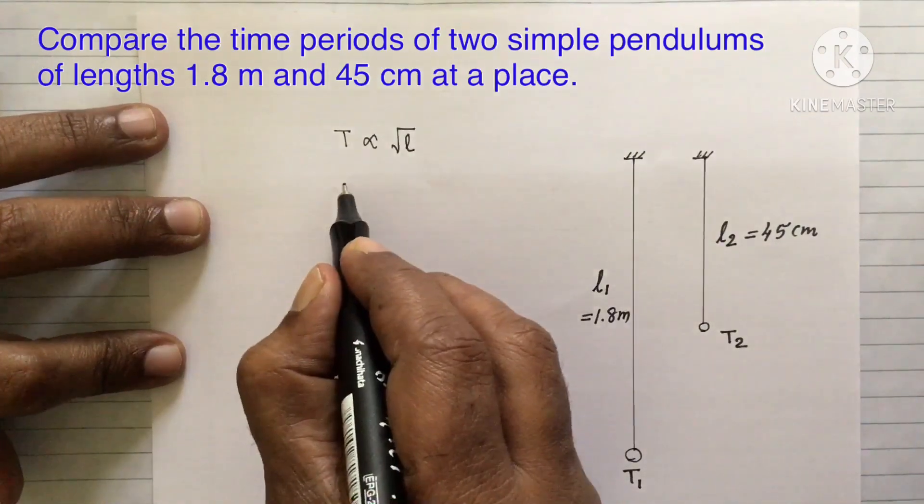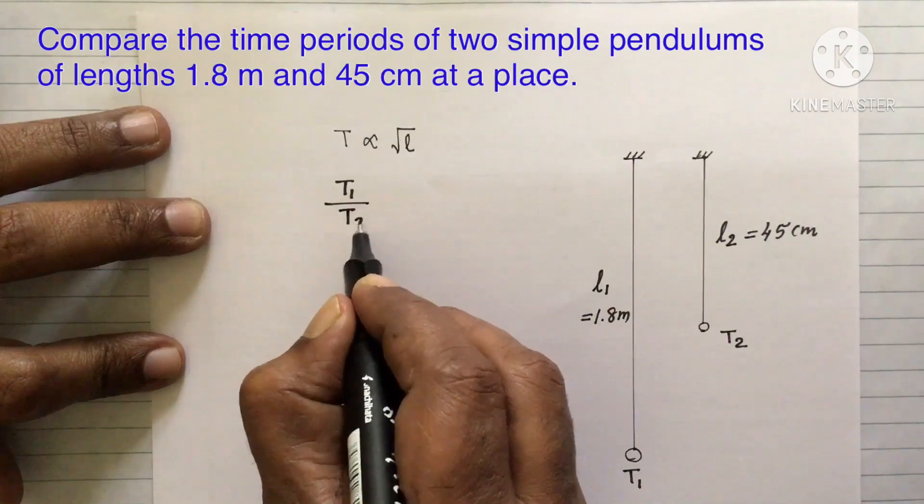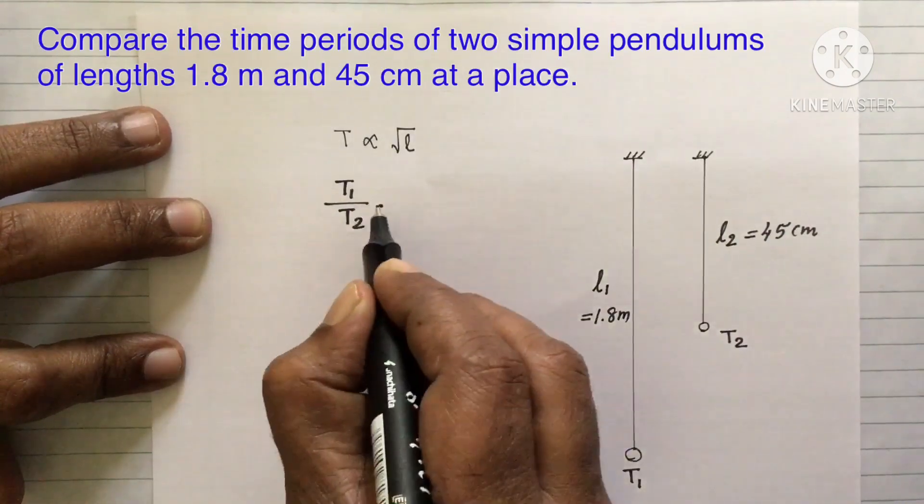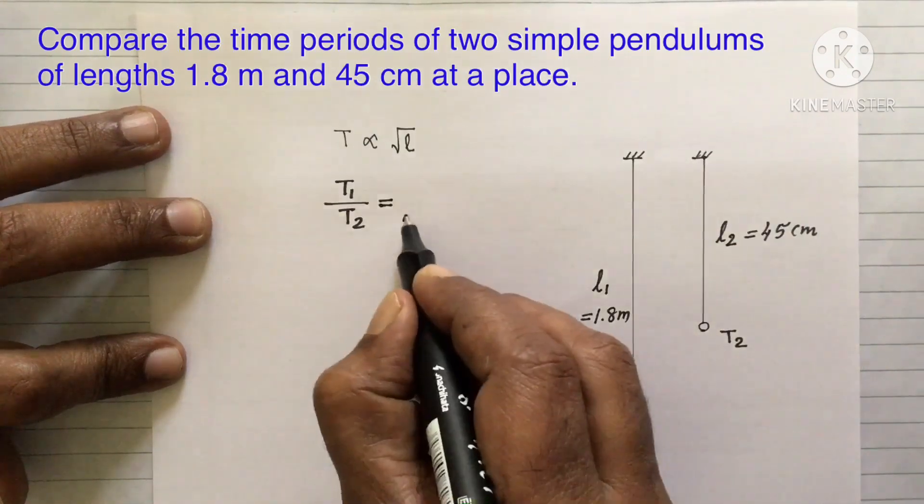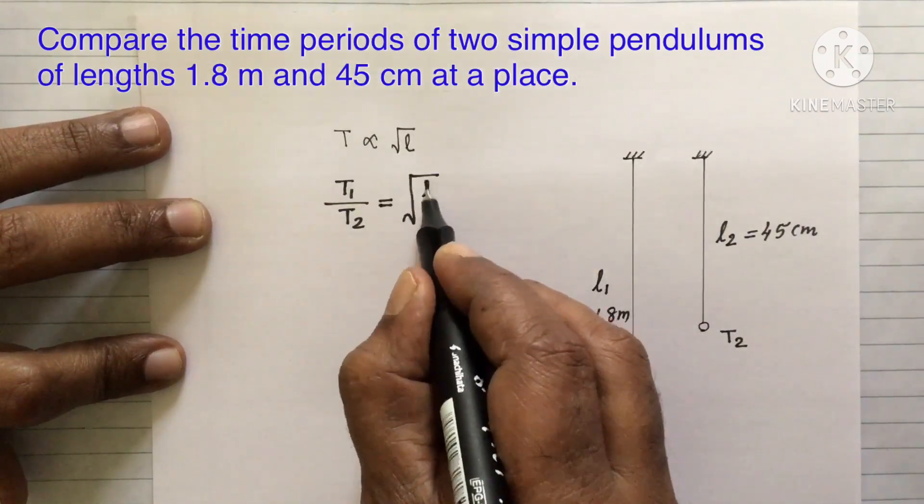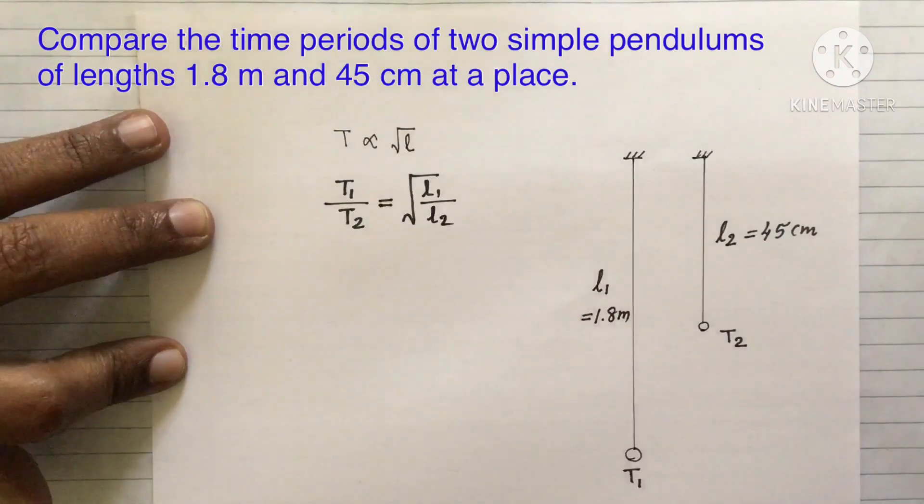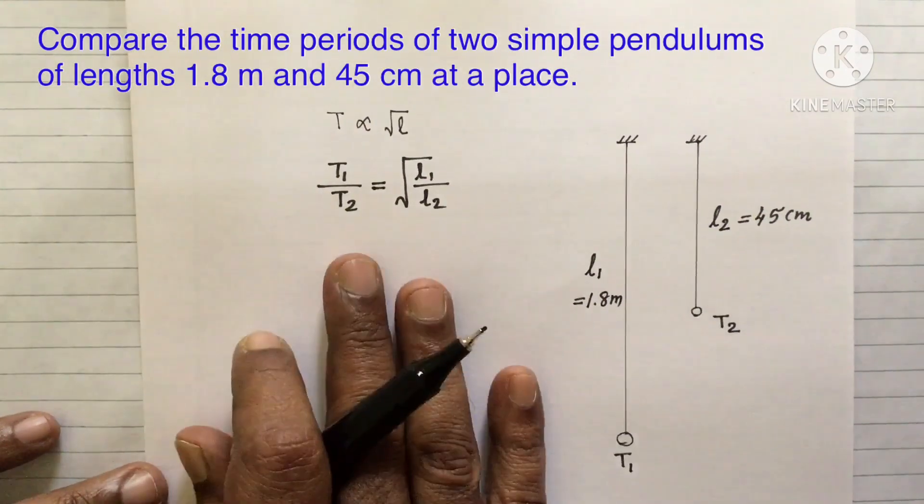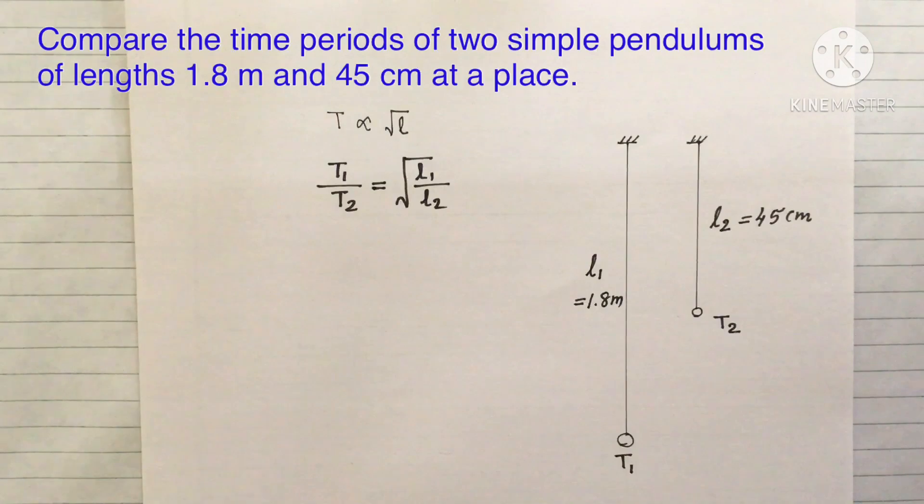Therefore, we can write time period of first pendulum divided by time period of second pendulum is equal to square root of L1 by L2. Hope that you have learned this much in your mathematics. Otherwise, also we can find it another way. Let us take it this way.